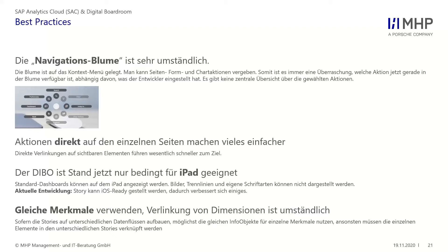Was man alternativ optimiert machen kann: Wir haben bei unseren Kunden angefangen, selbst Buttons zu zeichnen und auf diese Buttons Aktionen zu legen. Das ist mit einem gewissen gestalterischen Mehraufwand verbunden, weil man die Buttons selbst in einem Paint oder Photoshop bauen muss. Aber dann, wie bei einer Webseite oder einem Lumira-Dashboard früher, kann man einfach auf den Knopf drücken und weiß genau, was man kriegt – What you see is what you get.